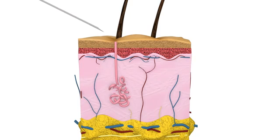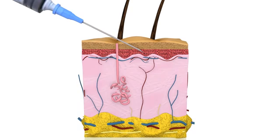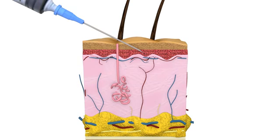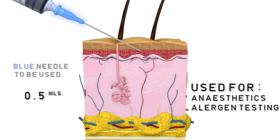The intradermal route is where medication is injected just below the top layer of the skin, the epidermis. As the injection site is not near any major muscles or blood vessels, the action of the medication is limited to the area of the injection site and is therefore primarily used for anaesthetics or allergy testing. A maximum amount of 0.5 mils of medication can be given. A blue needle should be used and inserted at a 10 to 15 degree angle.